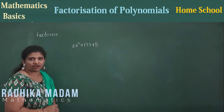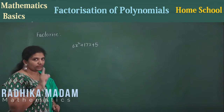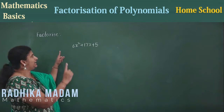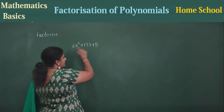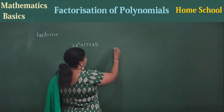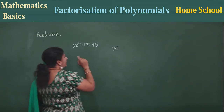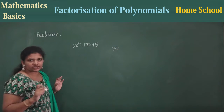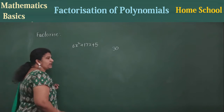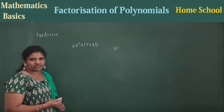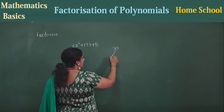6 into 5 — how much? 30. What is your first step? Multiply the corner numbers: 6 into 5 will be 30. With the signs, you need to multiply: plus into plus will be plus only. So now, for 30...